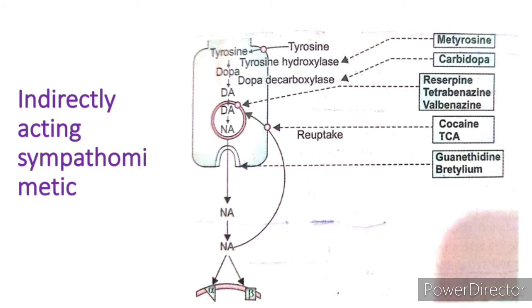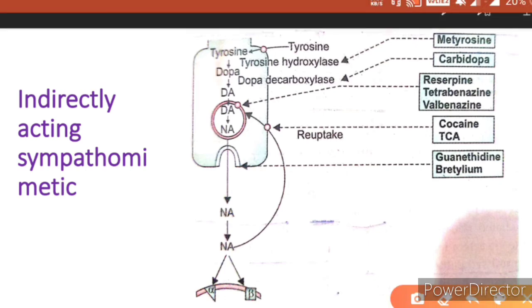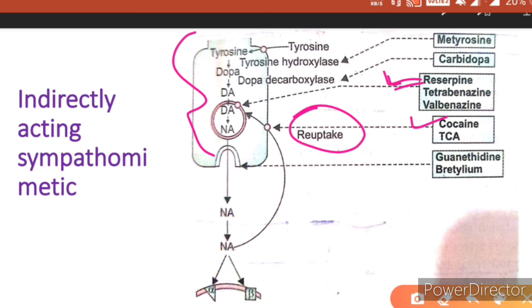Looking at indirectly acting sympathomimetics and the synthesis of noradrenaline: drugs acting as vesicular reuptake inhibitors include cocaine and tricyclic antidepressants. Reserpine is also a clinically important drug in this context. Carbidopa acts on the dopa decarboxylase enzyme.